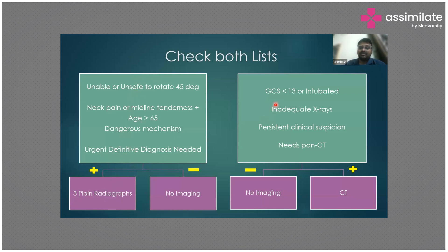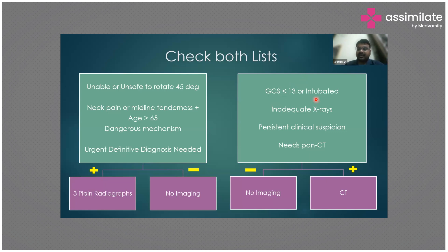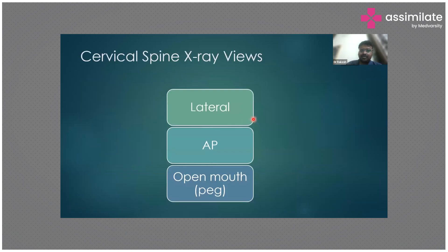If none of those factors are present, also consider the following: GCS less than 13; patient is intubated; inadequate X-rays; persistent clinical suspicion of C-spine injury despite a normal C-spine X-ray; or if the patient needs a pan-CT (head, neck, chest, abdomen, pelvis). In those cases, proceed directly with a CT scan. If none of these features are present, no imaging is required. When a cervical spine X-ray is indicated, you will need three views: lateral view, AP view, and the open-mouth or peg view.